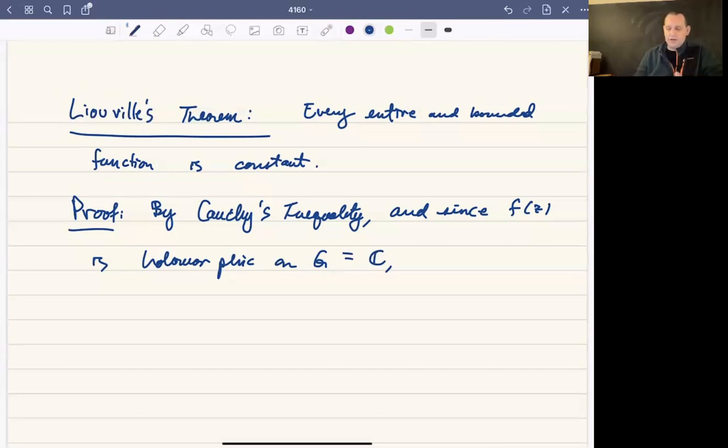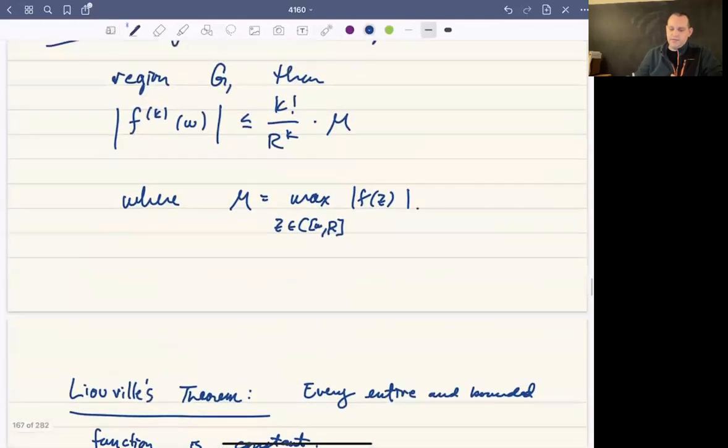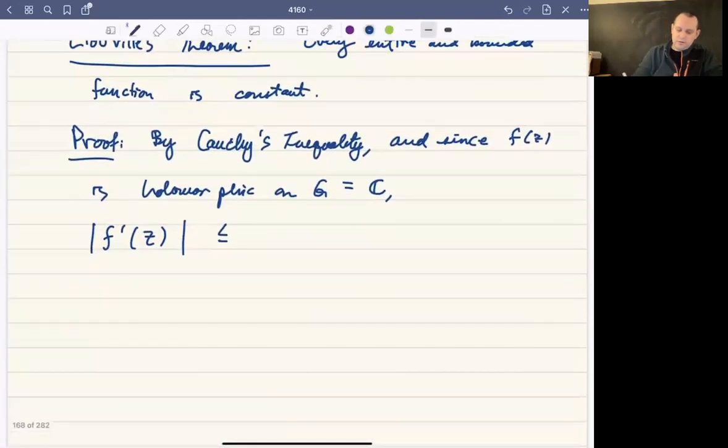So by Cauchy's inequality, what we get is that the modulus of F prime is going to be less than or equal to, let's just think about what happens when K is one. So when we have a first derivative, we're going to get one factorial, which is one, less than or equal to M over R.